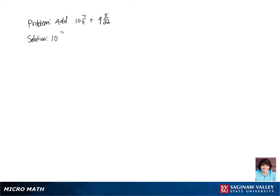Let's add 10 and 7 elevenths and 9 and 5 22nds. So the first thing that we're going to need to do is convert our mixed numbers to their fraction forms.